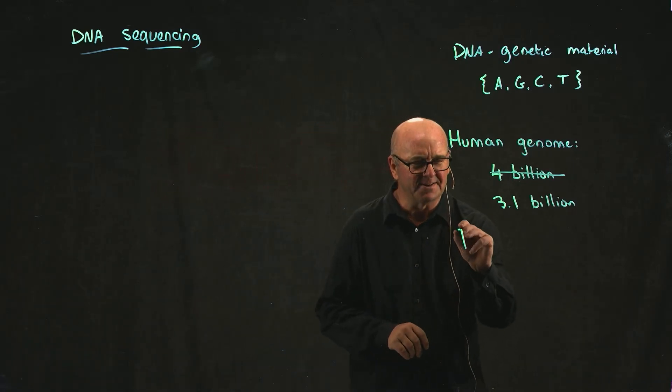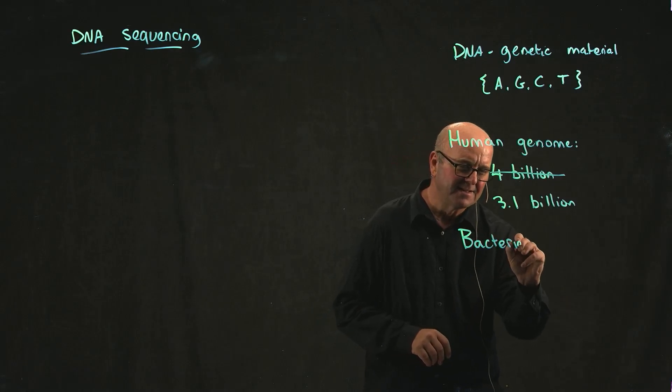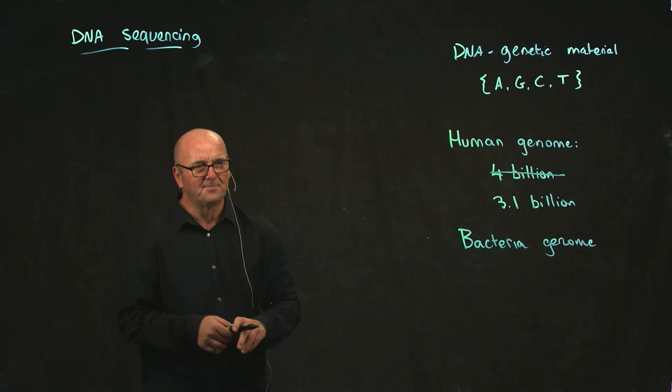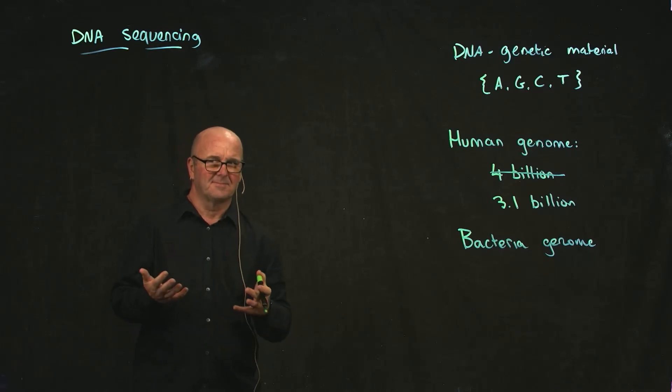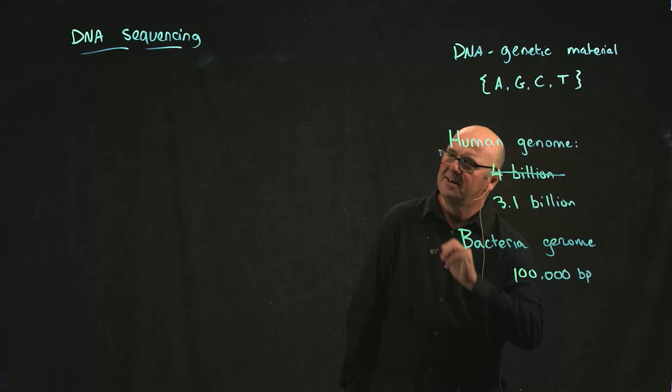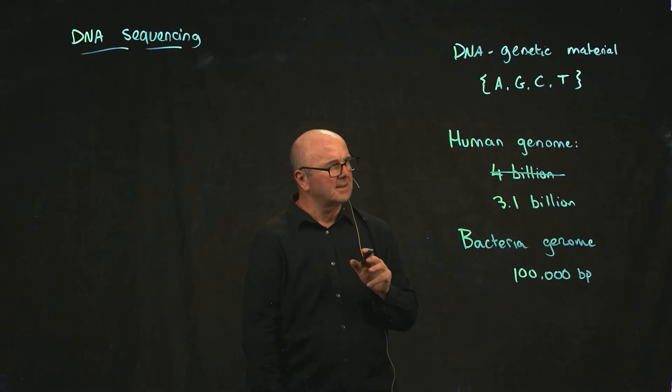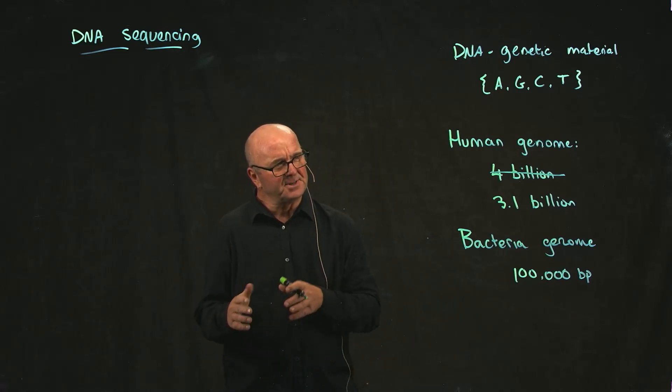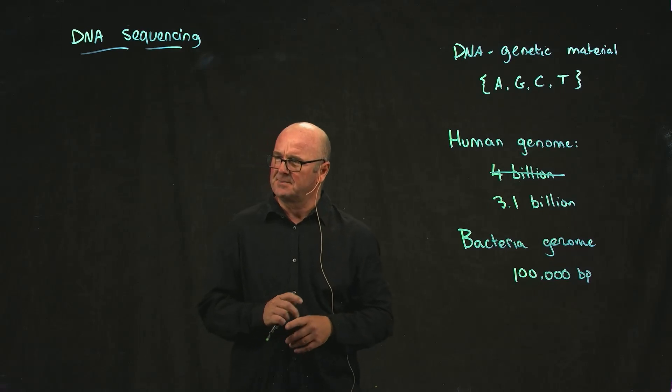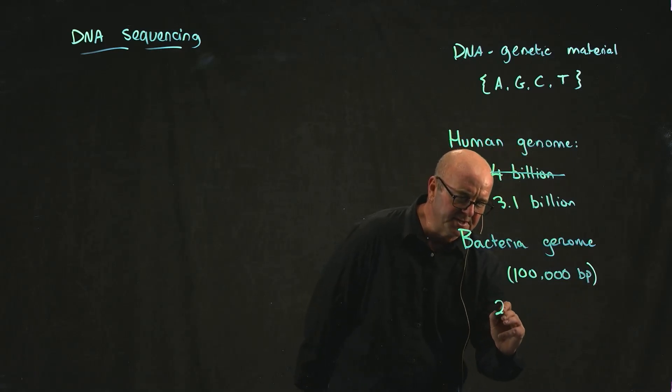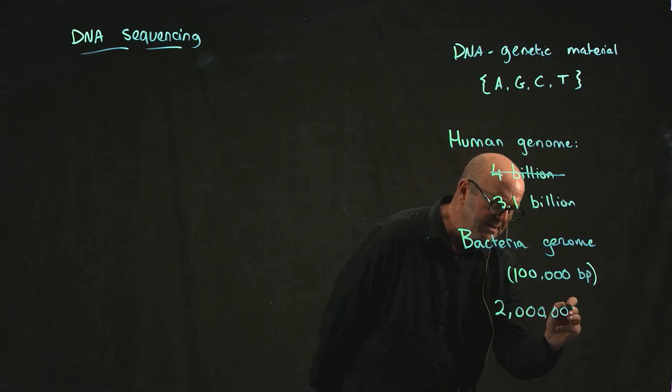How big are bacteria? How big is the bacterial genome? Take a guess. 100,000 base pairs? That's a little bit on the small side. The smallest... I think the smallest one is a little bit bigger than that, although people are always trying to find the smallest possible bacterial genome. But on average, bacterial genomes are about 2 million base pairs.